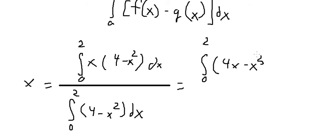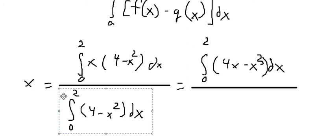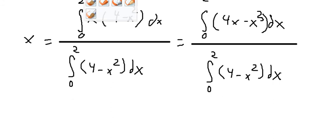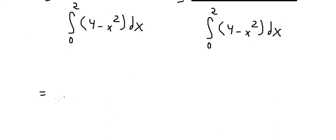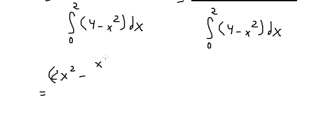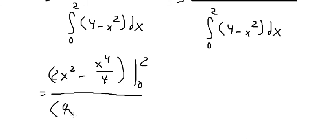The numerator becomes the integral of 4x minus x cubed dx from 0 to 2, which gives 2x squared minus x to the power of 4 over 4, evaluated from 0 to 2. The denominator is the integral of 4x minus x cubed over 3, evaluated from 0 to 2.